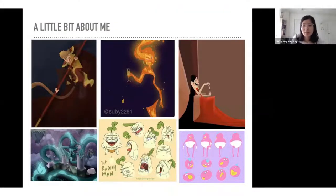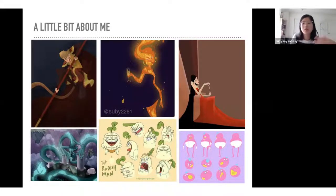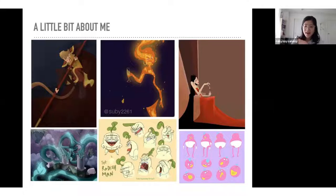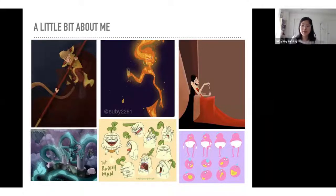A little bit about me. My name is Ruby and I'm currently first year going into second year at Sheridan. I also did two years of illustration at OCAD. I went to school with Catherine, and I really enjoy doing cartoons and drawing a lot. I love animating as well.